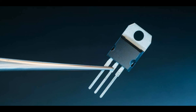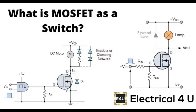Signal modulation is a key function in communication systems, allowing the transmission of information over a carrier signal. While MOSFETs are not the primary components for modulation, they play a role in the modulation process, especially in the context of amplification and signal processing.